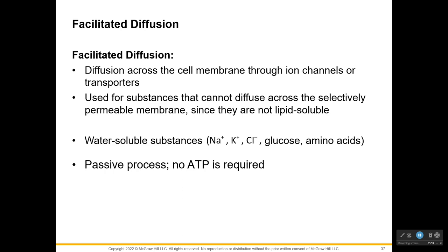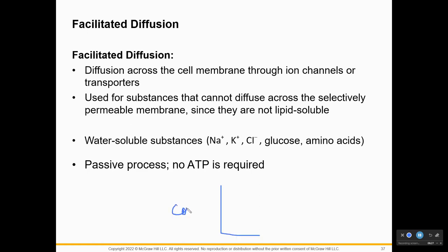They're going to use a protein channel to get across the membrane, moving from where there's more concentration to less. We usually draw this as a gradient — a hill — going from high concentration down to low. If we're graphing this, oxygen moves from where there's more over time to areas where there's less until you reach equilibrium. As long as you're moving from high concentration to low, it is a passive process, which means there is no ATP required.